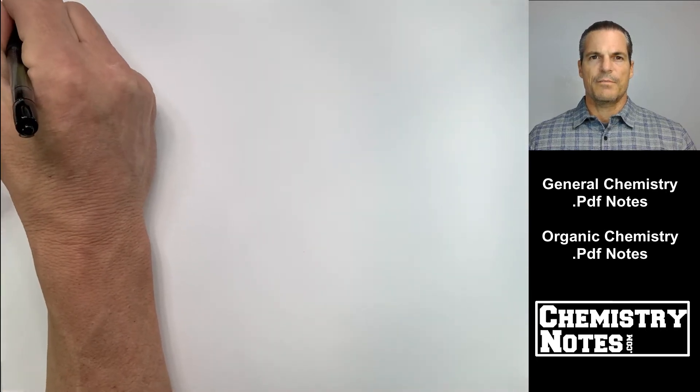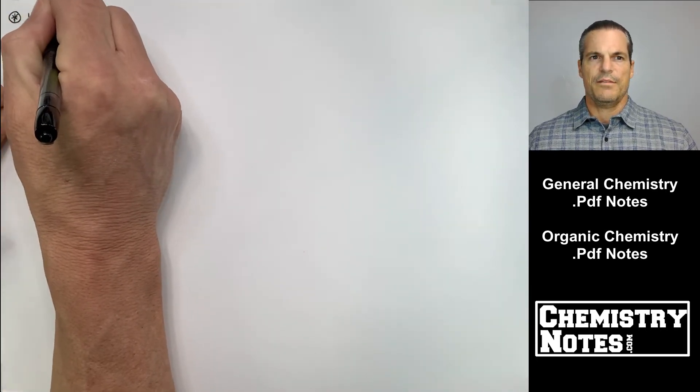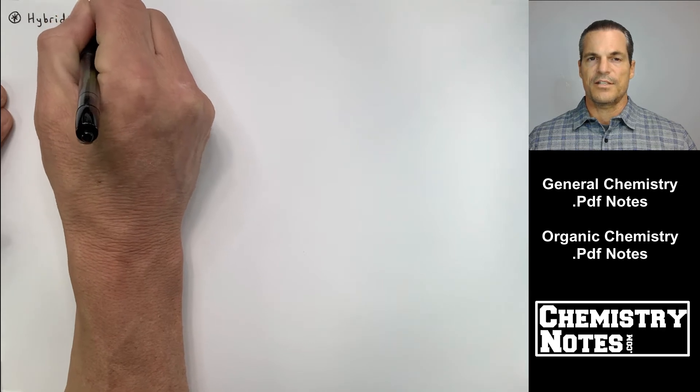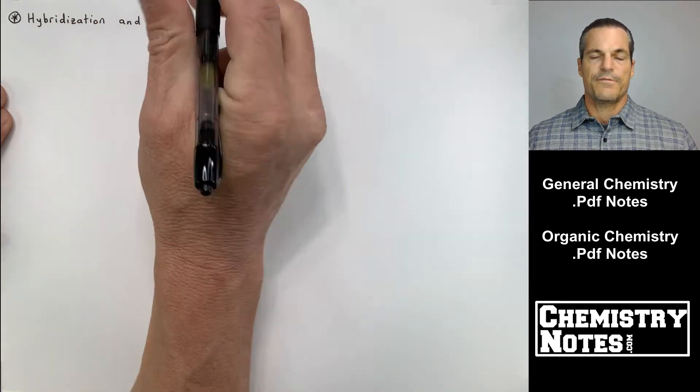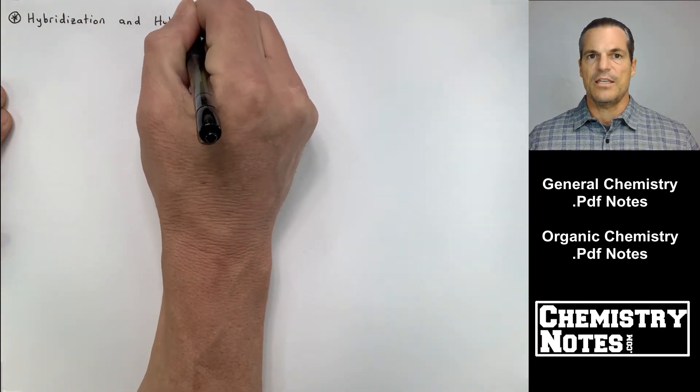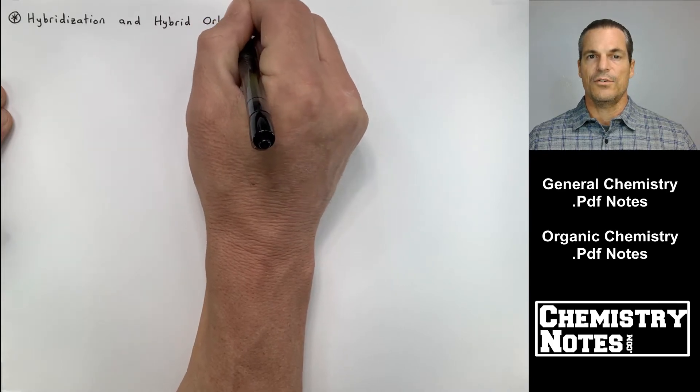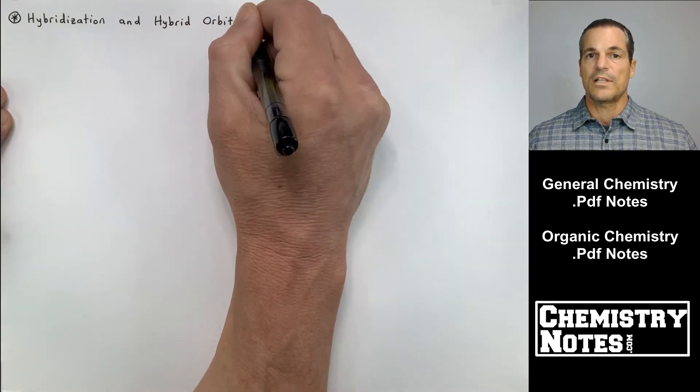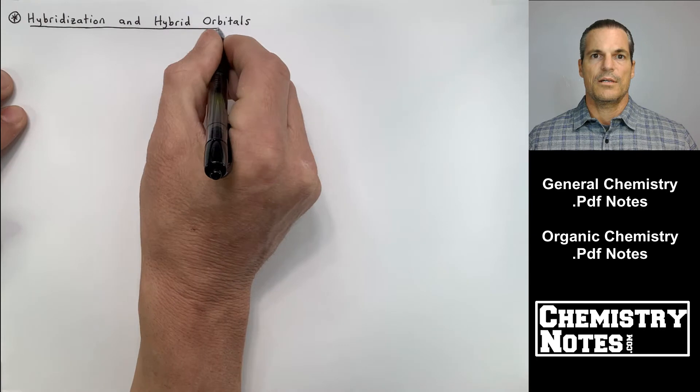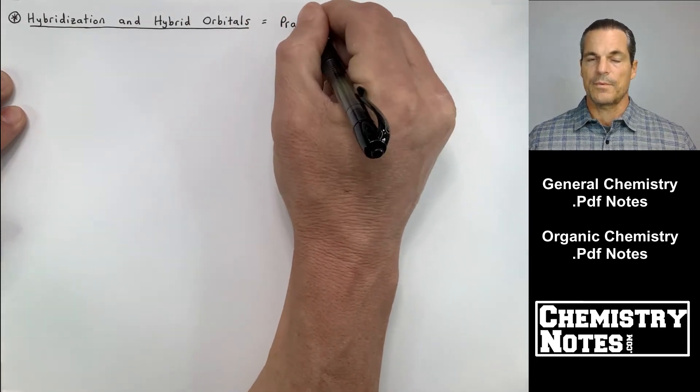Hi everybody, Justin here from chemistrynotes.com and this is our third video on section 9. So the first two videos, S9E1 and S9E2, we've talked about the localized electron model, different types of hybridization and hybrid orbitals.